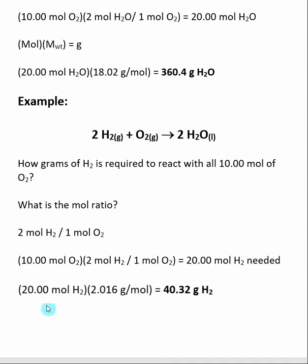If I want to find the grams, once again, mole times molecular weight gives me grams. So I know I need 20 moles of H₂. I multiply by the molecular weight of H₂. And I get 40.32 grams of H₂ required. So in order to react with my 10 moles of O₂, I'm going to have to use 20 moles of H₂.